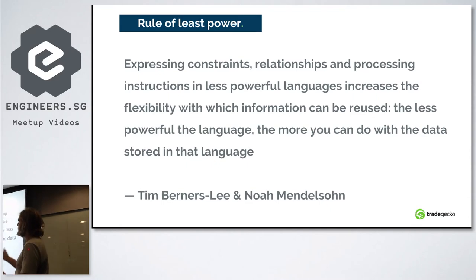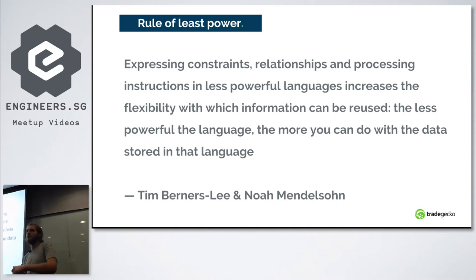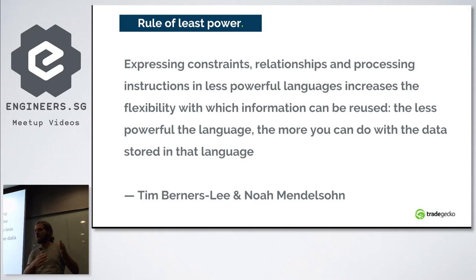There's an important principle here: expressing constraints, relationships, and processing instructions in a less powerful language increases the flexibility with which information can be reused. The less powerful the language, the more you can do with the data. The most powerful language is CSS selectors; the least powerful is simply using the word 'save.'